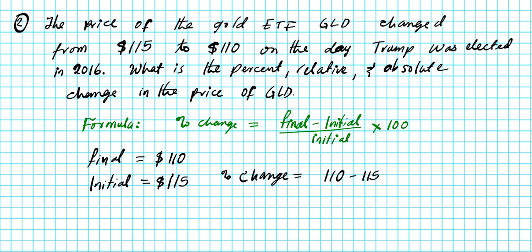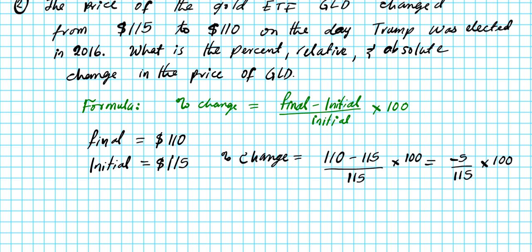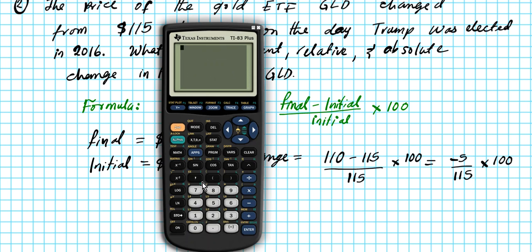Percent change = (110 − 115) / 115 × 100 = −5 / 115 × 100. Using a TI-83 calculator: (−5 / 115) × 100 gives approximately negative 4.35 percent.